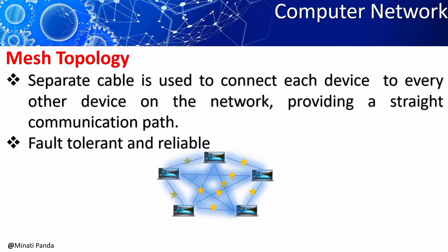Here, each workstation is directly connected to every other workstation in the network. Suppose there are five computers and A is connected to all other computers directly. If there is a failure in one connection, there are many other ways to reach the destination.